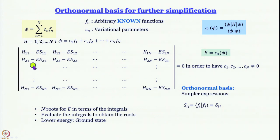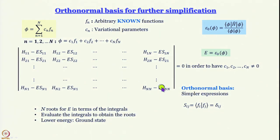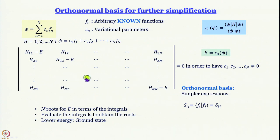Going down the first column, all the S_ij second terms vanish. The 2,2 term: S_22 = 1, so you get H_22 - E. The diagonal elements are all of the form H_ii - E, and off-diagonal elements are H_ij or H_ji. So the secular determinant takes the form: H_11 - E, H_12, H_13 … H_1n in the first row, H_21 … H_n1 in the first column, and H_ii - E on the diagonal.